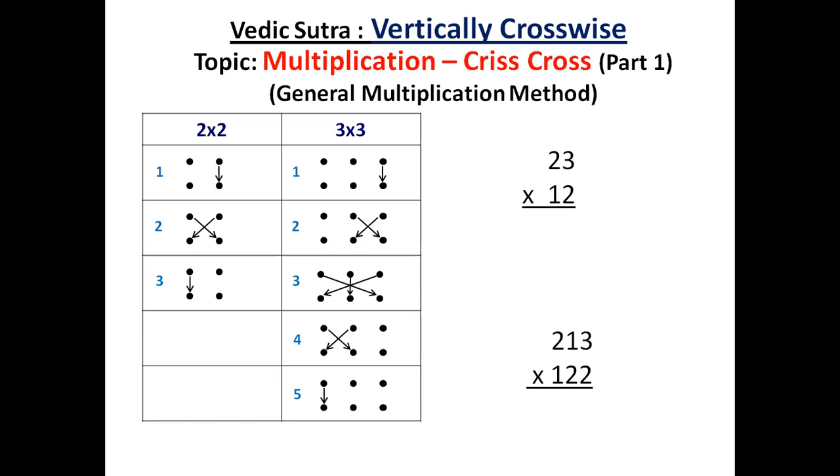Multiplication of 2 digit by 2 digit and 3 digit by 3 digit. What you see here is a pattern indicating dots here as digits and arrows here as multiplication.